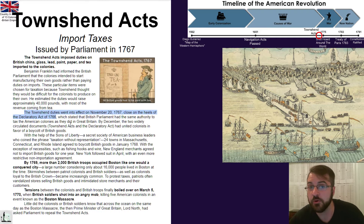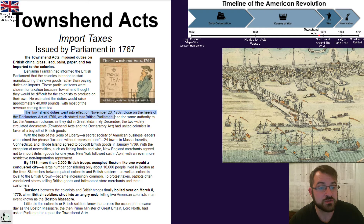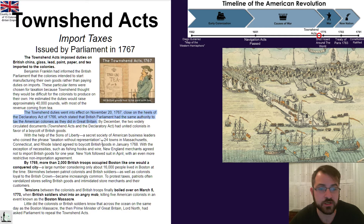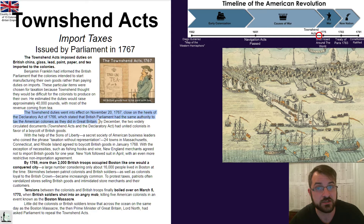And if you remember from our previous readings, the Declaratory Act stated that British Parliament had the same authority to tax the American colonies as they did in Great Britain. They were saying that Parliament has the ultimate taxing authority, not the local governments where the 13 colonies' citizens actually got to vote.